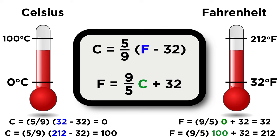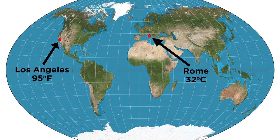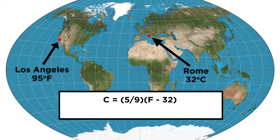Now let's try a different example. Let's say that on a particular day it's ninety-five degrees Fahrenheit in Los Angeles and thirty-two degrees Celsius in Rome. Where is it hotter? Let's take our Fahrenheit temperature, plug it in here, and we get thirty-five degrees Celsius.